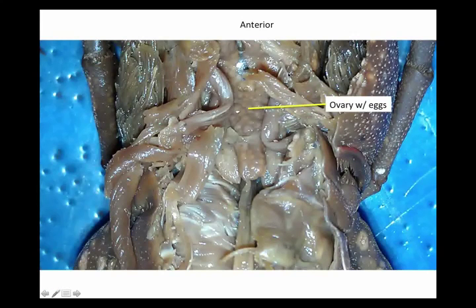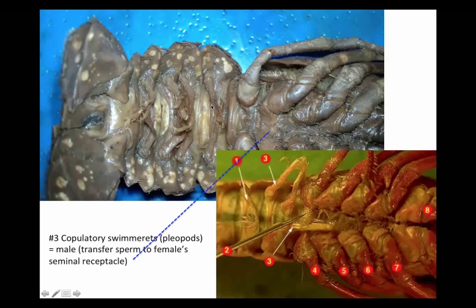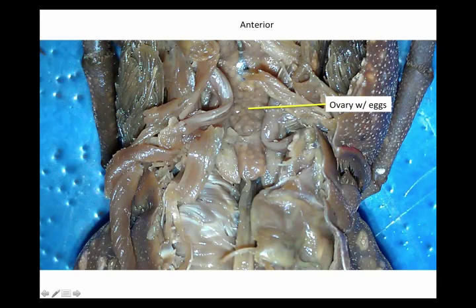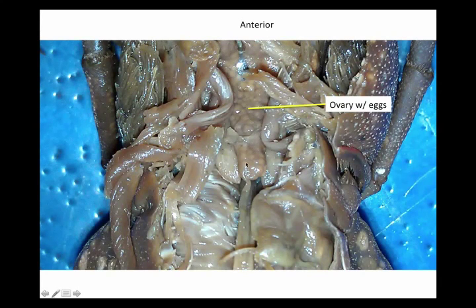This is a female crayfish that actually has eggs in her ovaries. Here's the abdomen and here are the gills, and the cephalothorax is up here. You can see her ovary and uterus — all the reproductive parts — and her eggs inside. That's pretty neat to be able to see that.